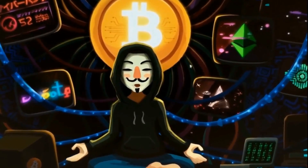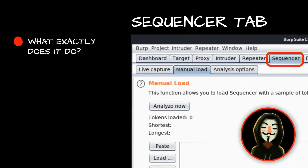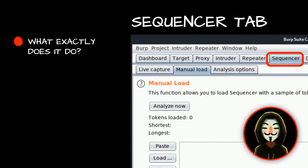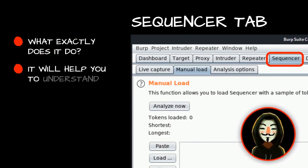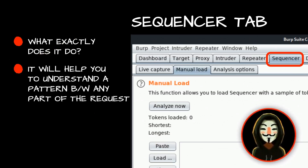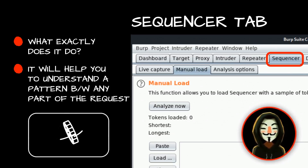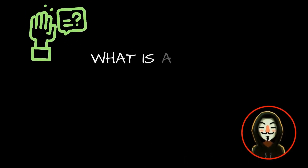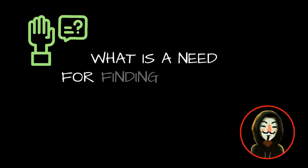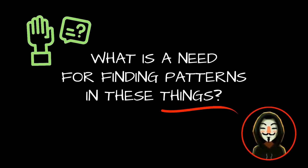Let's first talk about what exactly the Sequencer tab is and what it does. In simple terms, the Sequencer tab helps you understand a pattern within any part of a request — whether it's cookies, tokens, or similar values. You may be asking: what is the need for finding patterns in these things?